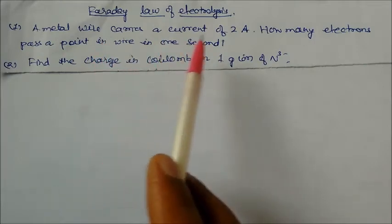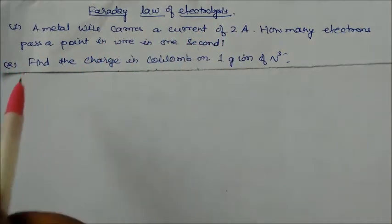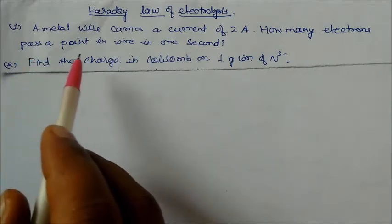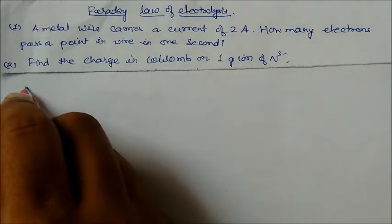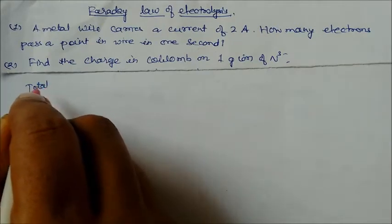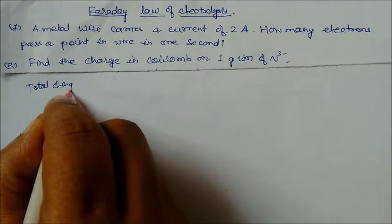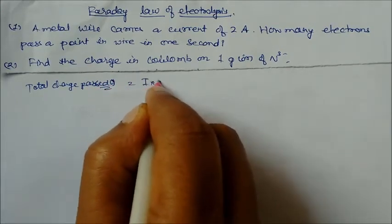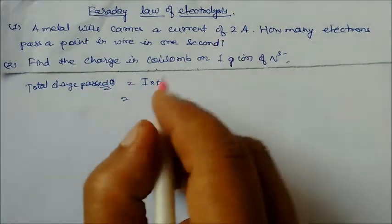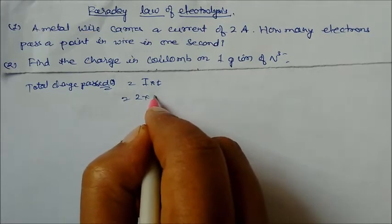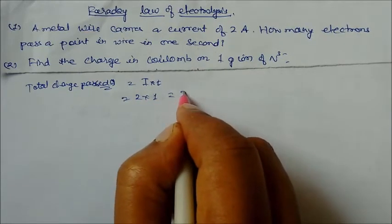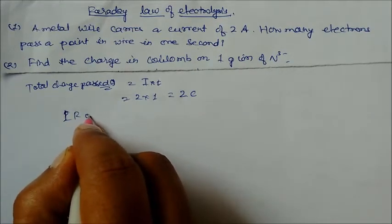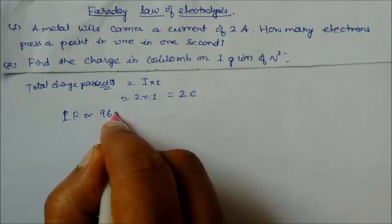We will see further problems on electrolysis. A metal wire carries a current of 2 ampere — how many electrons pass a point in the wire in one second? So here we write that the total charge passed is q = i × t. Here i is 2 ampere and time is 1 second, so it gives you 2 coulomb.